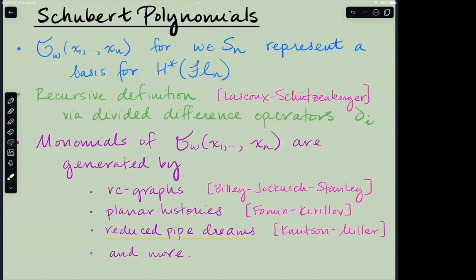Rather, the monomials of Schubert polynomials are generated by many different combinatorial objects. Here's a subset of the history: the RC graphs of Billey-Jockusch-Stanley, the planar histories of Fomin-Kirillov, and the reduced pipe dreams of Knutson-Miller. These models are combinatorially equivalent to one another. I will focus on the reduced pipe dream model to present the crystal structure.